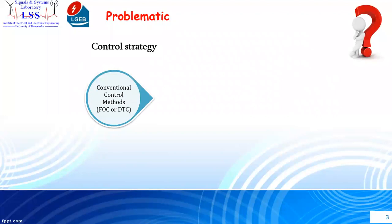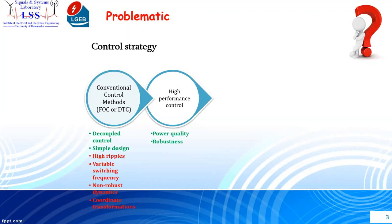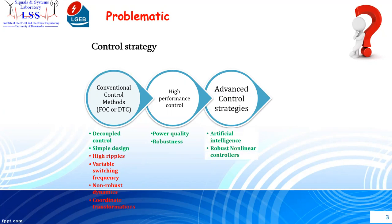Generally, the conventional control strategies used for the control of AC machines — like field-oriented control and direct control — present some advantages, such as simple design and decoupled control. However, they also present disadvantages such as high variable switching frequency, non-robust dynamics, and coordinate transformation. In order to address power quality and robustness, we need to move to advanced control strategies. Today, we are going to talk about model predictive control.